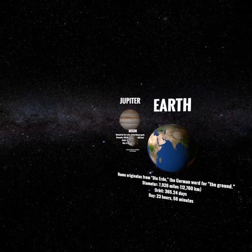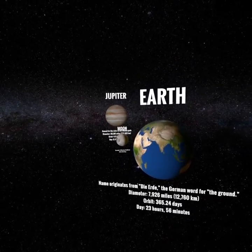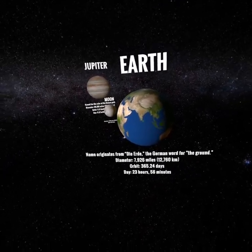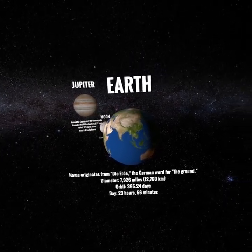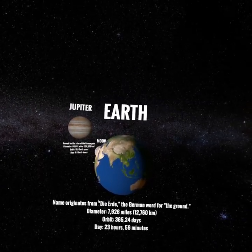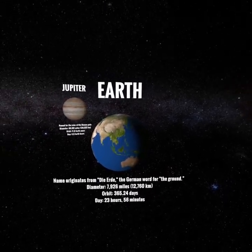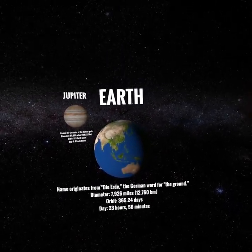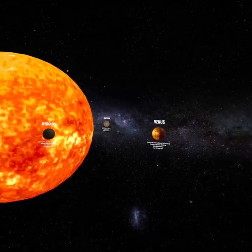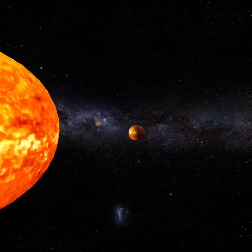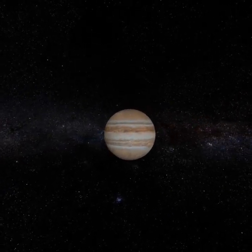It's worth noting that the rotation and orbiting of all the planets is done by scripting each one of them with their own speed and parameters. As you may notice, the information about each planet always faces the camera no matter where the camera goes, and that's also done through scripting.